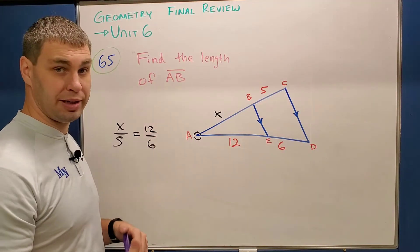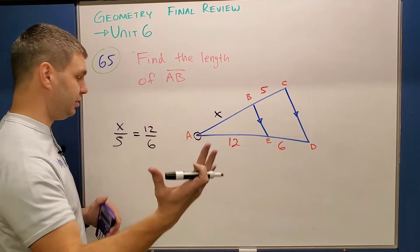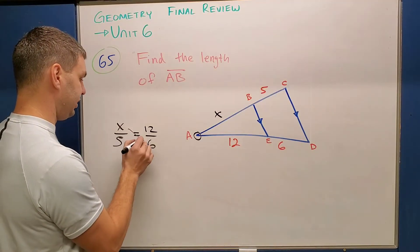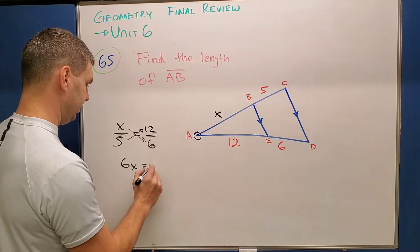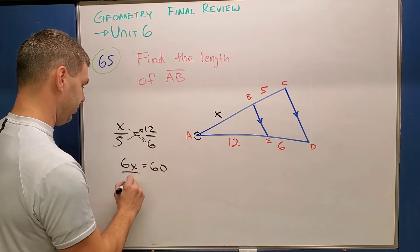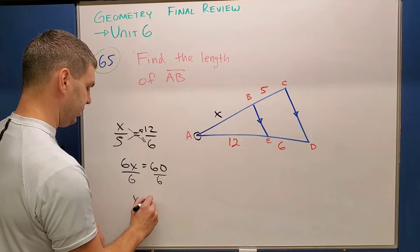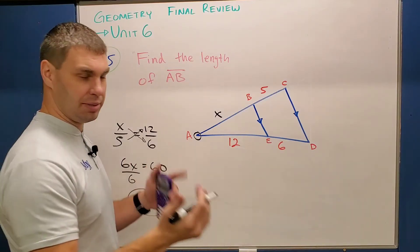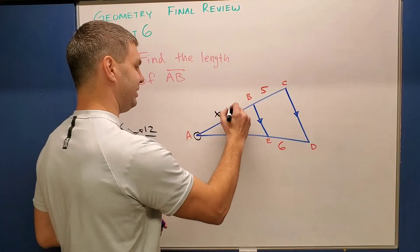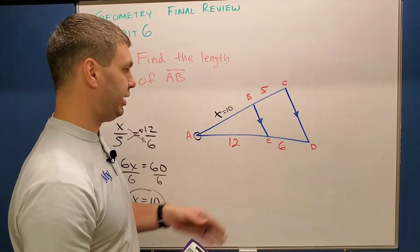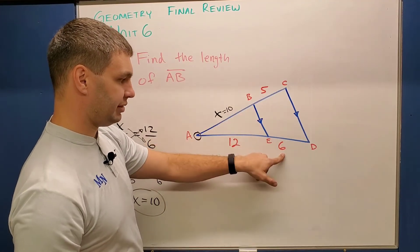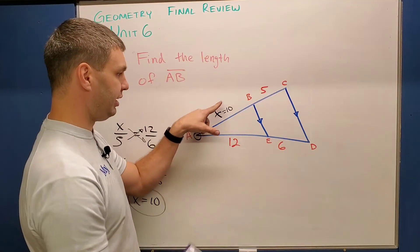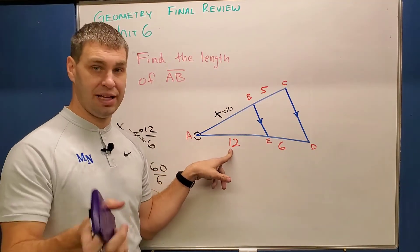This just turns into a problem like we had before where we cross multiply and solve for x. So x times 6 is 6x, 5 times 12 is going to be 60. And so if I divide both sides by 6, x equals 10. And then I always like to put it back into my picture to see if it makes sense. And in this case, it does, right, for the two parts that I have: 5 is a little bit less than 6, and so now for what I filled in, 10 is a little bit less than 12. That makes sense.